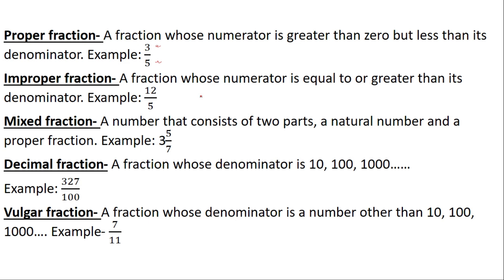Improper fraction: a fraction whose numerator is equal to or greater than its denominator, for example 12 by 5. Mixed fraction: a number that consists of two parts — a natural number and a proper fraction. In this example, 3 is the natural number and 5 by 7 is the fraction. To convert, we calculate 7 × 3 + 5 by 7, which gives 21 plus 5 by 7, that is 26 by 7 — it changes to an improper fraction.